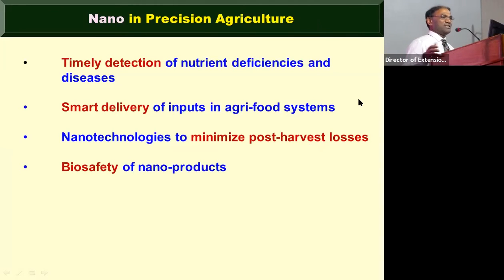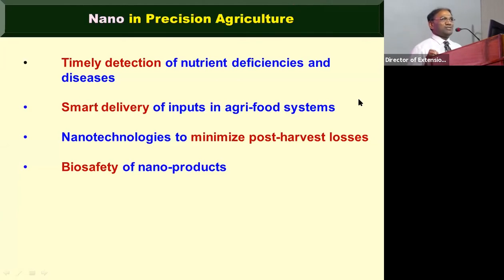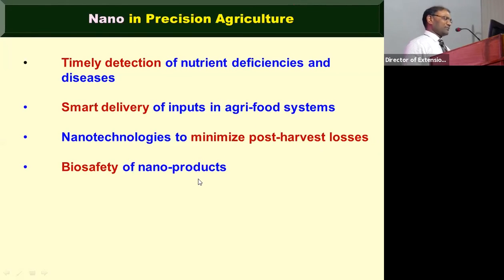In agriculture we have a wide range of entomologists who teach about so many insects, but many invasive pests we were never taught about at the undergraduate level. Timely detection of pests, diseases, and nutrient deficiencies is essential. For smart delivery, if a crop takes only 20–30 kg of nitrogen out of 100 kg applied, 70 kg is wasted. With nanotechnology we can achieve close to 90 percent use efficiency. These are the four areas I am going to address.